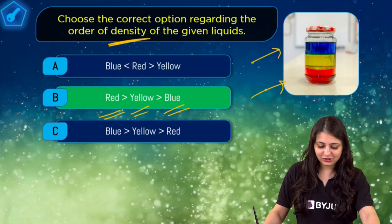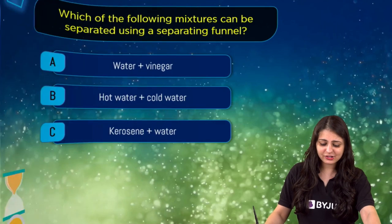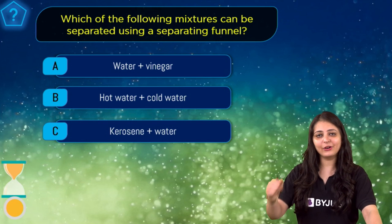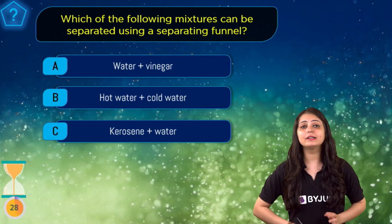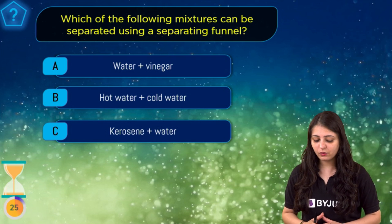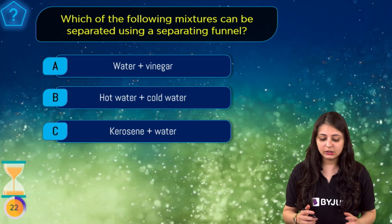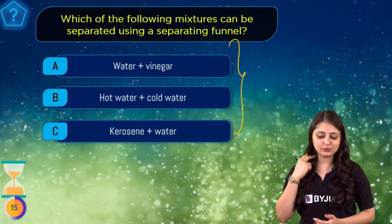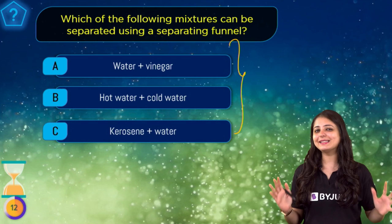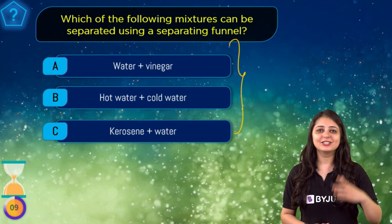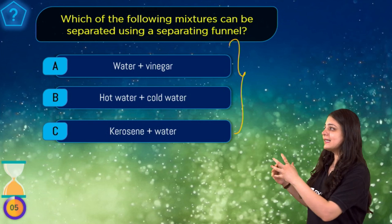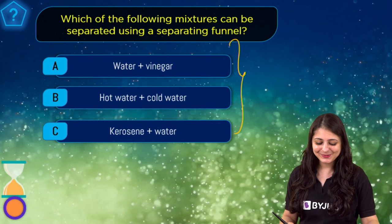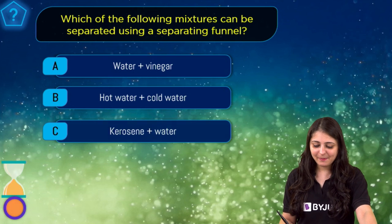Moving on to question number two: which of the following mixtures can be separated using a separating funnel? The options are: A) water plus vinegar, B) hot water plus cold water, C) kerosene plus water. You've got 30 seconds. I hope you're posting your answers and remembering the principle we just learned.